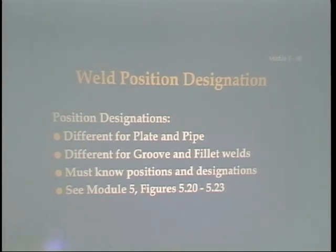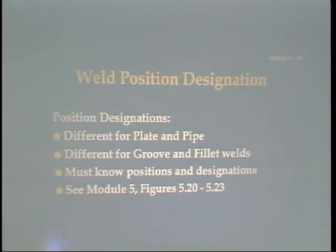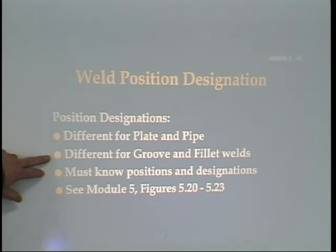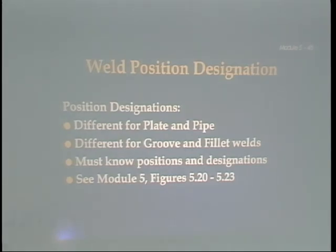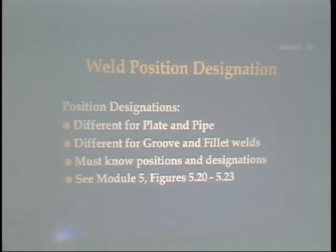Position designations are different for plate and pipe, and different for grooves and fillets. You must know the positions and their designations — you will be tested on those not only in the module test but also the final test, and on the CWI exam. Thickness range qualified: another important essential variable determining coverage is the thickness of the test plate or pipe, which depends on the code and the test specimen thickness.